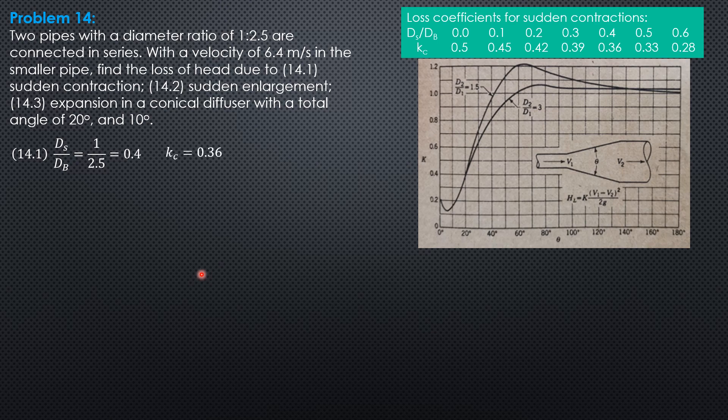Therefore, the head loss due to sudden contraction is 0.36 of velocity head in the smaller pipe.